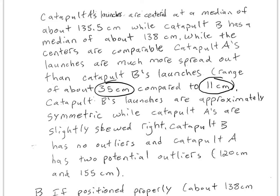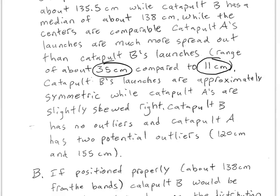I said catapult B has no outliers. Catapult A has two potential outliers. That 120 centimeters and 155 centimeters are kind of far away from the other launches from catapult A. So those are two potential outliers. Again, I'm not going to go through the whole, is the 155 centimeters more than one and a half interquartile ranges from Q3? I'm not going to do that whole computation out. I'm just commenting that they might be outliers if I really want to know I can go through the test. But that's not necessary for this question.